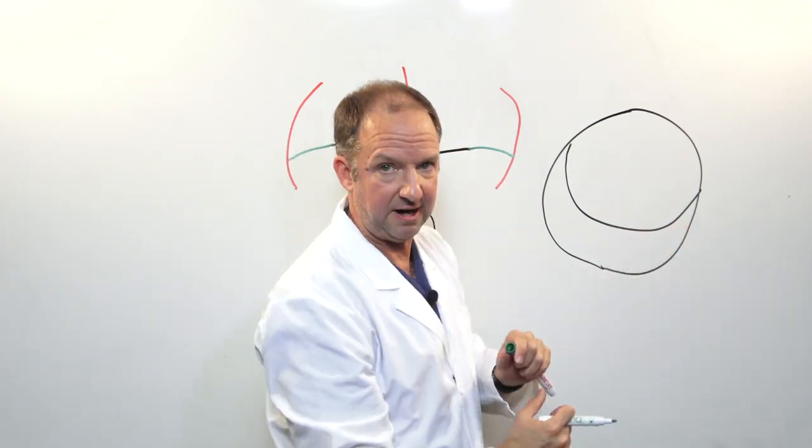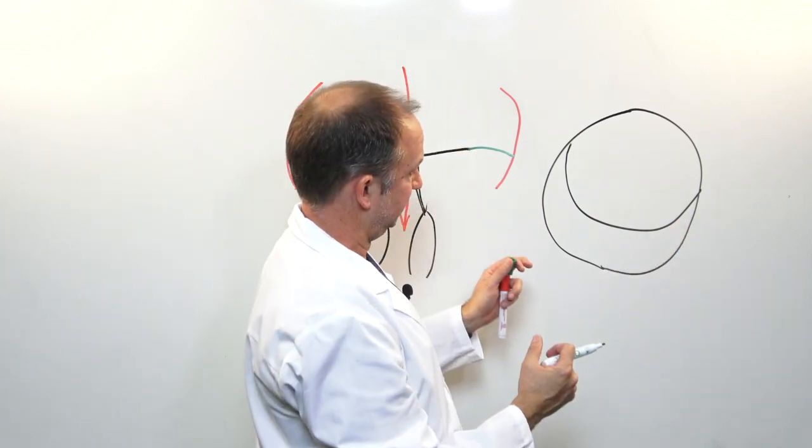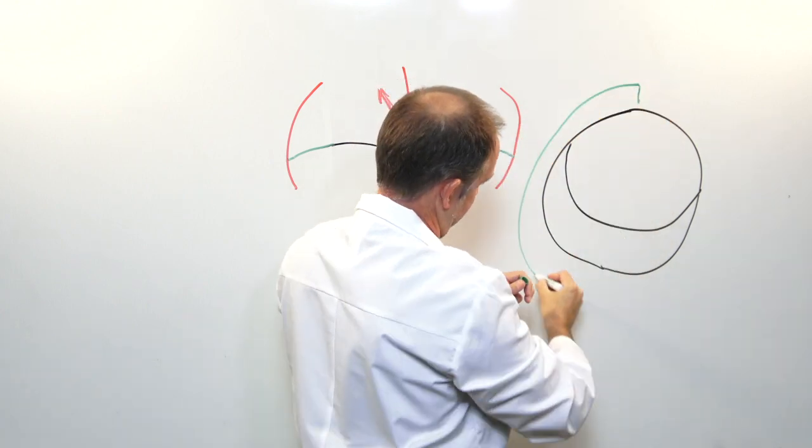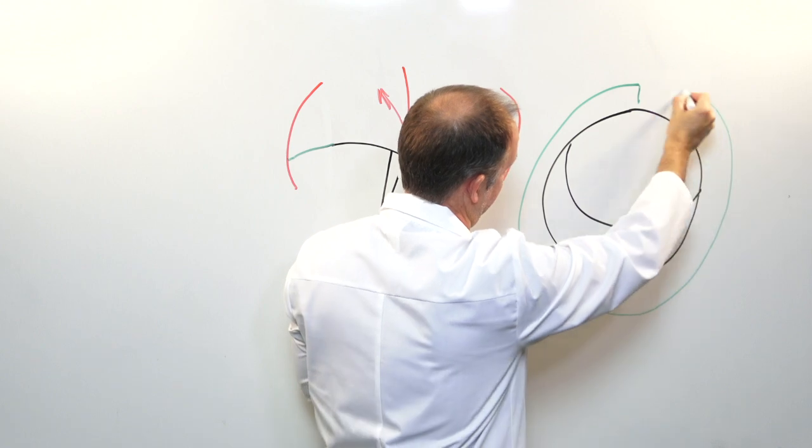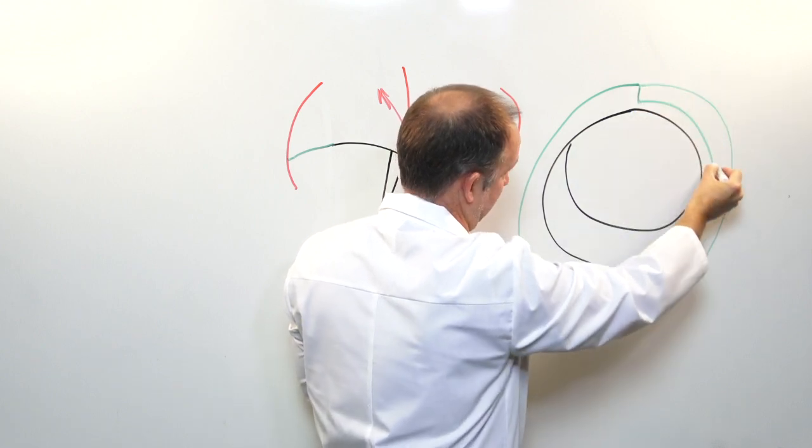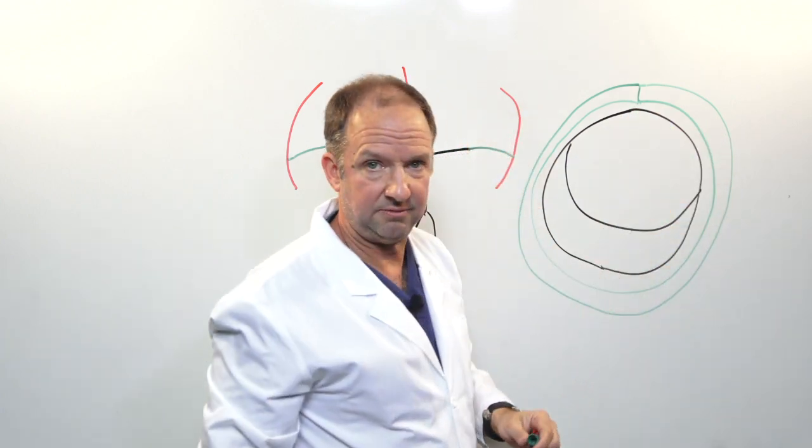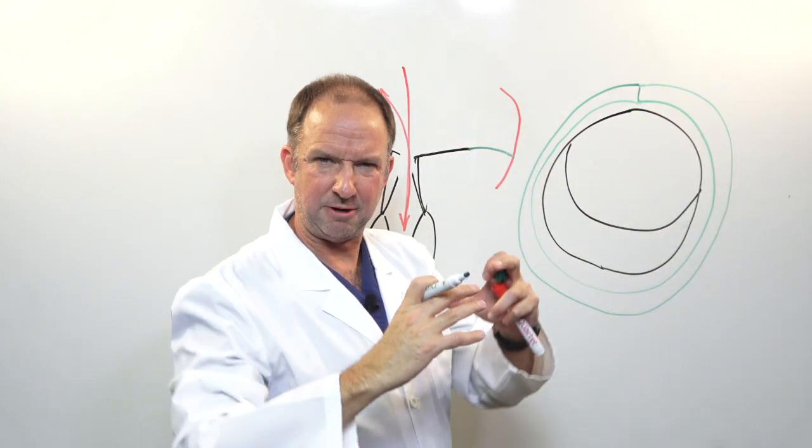Now this is the mitral valve as you would see it in a surgical view. And what we do is we put a ring and suture it around the mitral valve annulus. That's like a belt.